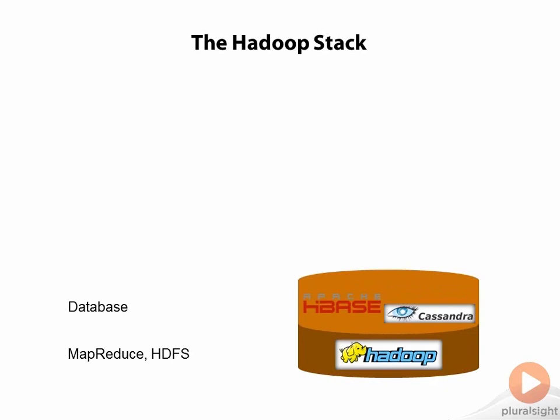On top of Hadoop, we might use one or another NoSQL database — a special category called Wide Column Stores. The two most pertinent of which are HBase and Cassandra. HBase can use HDFS to store its tables. Cassandra can use the HDFS-compatible Cassandra file system to store its tables. As far as Hadoop is concerned, tables in these databases are just HDFS files, meaning data stored in these databases can be operated on using MapReduce jobs in Hadoop.